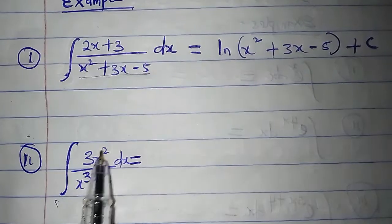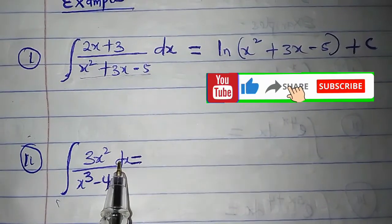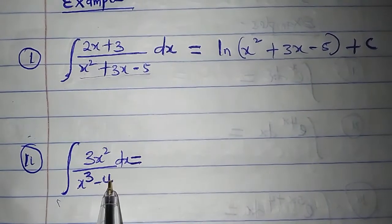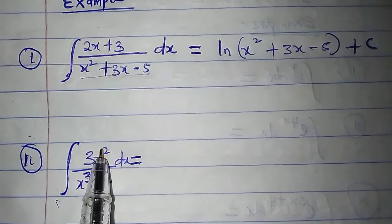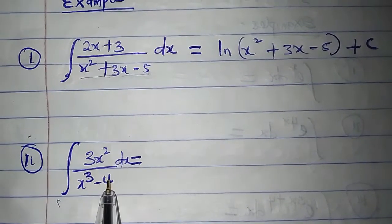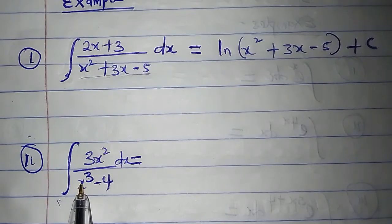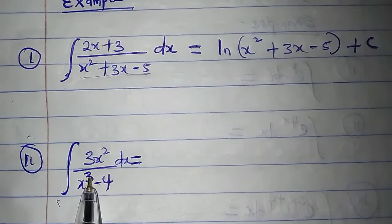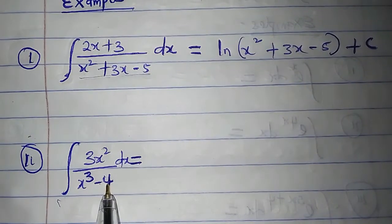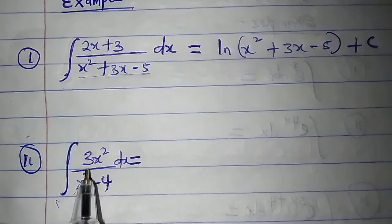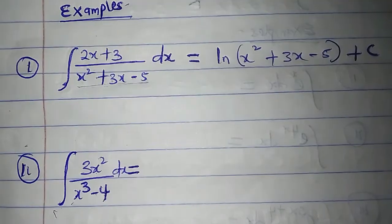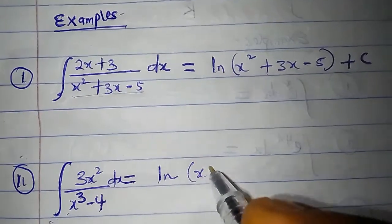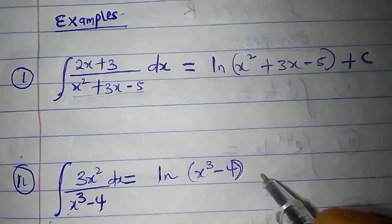Next: integrate 3x squared all over x cubed minus 4 with respect to x. The denominator is x cubed minus 4, and the numerator is 3x squared. Differentiating x cubed minus 4 gives 3x squared minus 0, which is 3x squared. So the derivative of the denominator equals the numerator, meaning the integral is simply ln of x cubed minus 4, plus c.